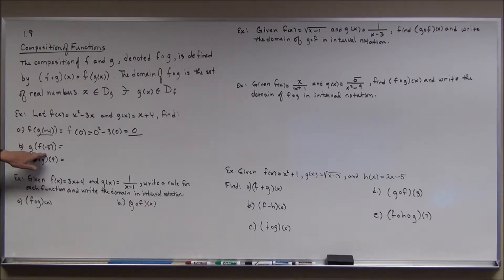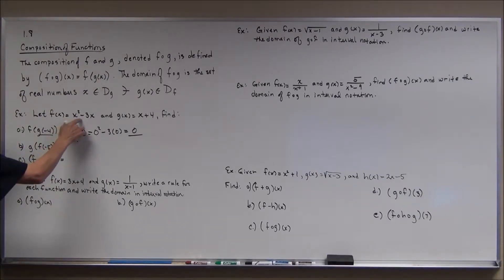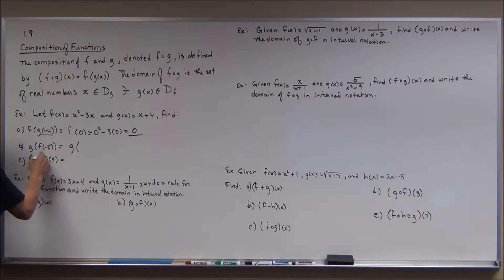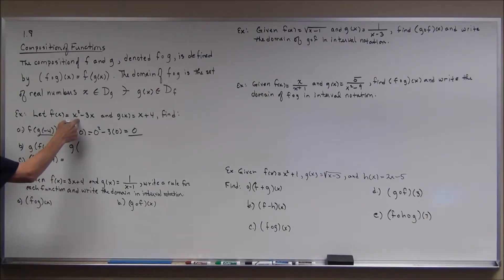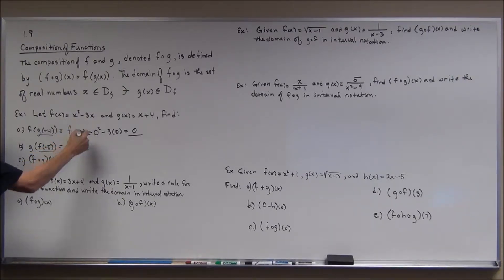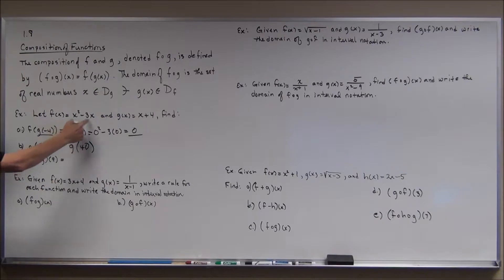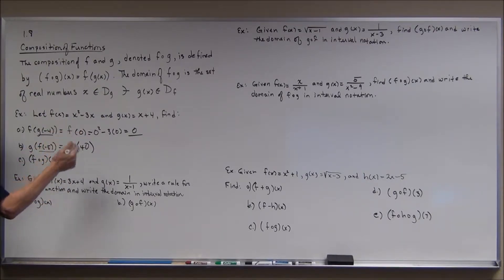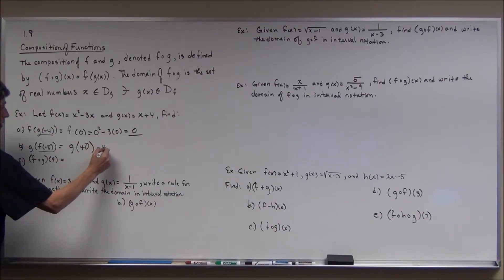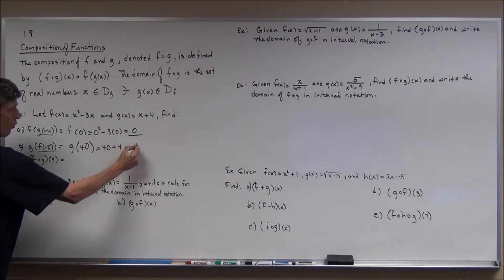Same kind of problem, only we switch the functions around: g of f of negative 5. First I plug negative 5 into f. f of negative 5 is negative 5 squared — 25 — minus 3 times negative 5, so plus 15. 25 and 15 is 40. Now I find g of 40, which is 40 plus 4, or 44.